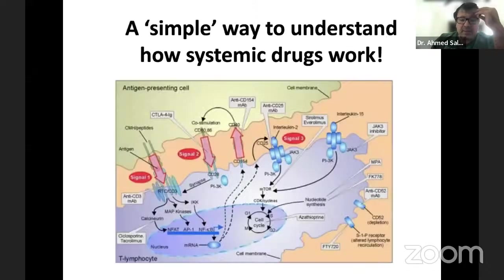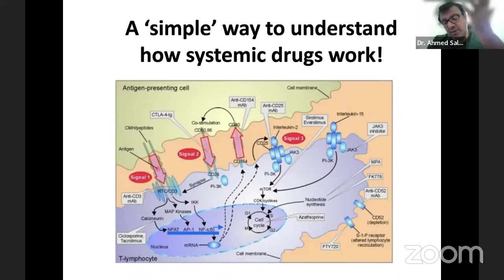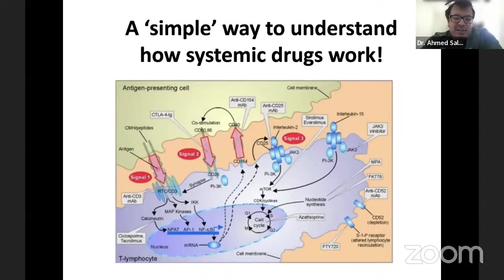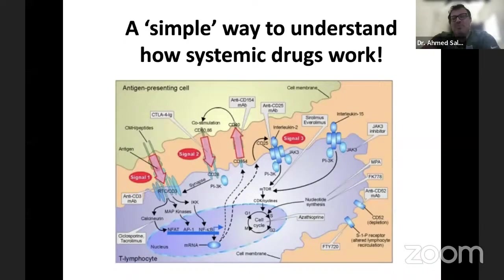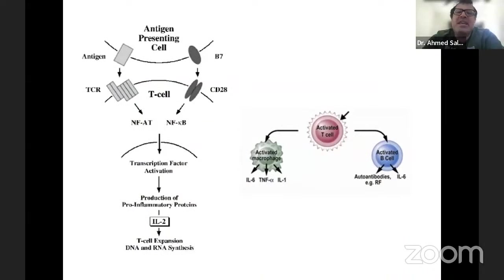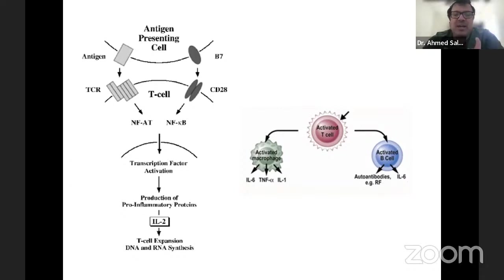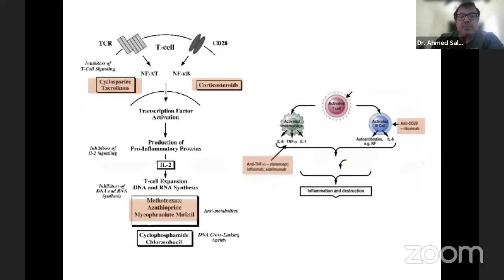I like this simplified diagram of uveitis immunology because it makes management easy to understand. The pathway: the antigen-presenting cell leads to T-cell reactivation, transcription factor activation, production of pro-inflammatory proteins such as interleukin-2, T-cell expansion, DNA and RNA synthesis. T-cells also activate macrophages and B-cells. Understanding this pathway allows you to place where each medication works — and this is more than enough to know how medications function in uveitis.